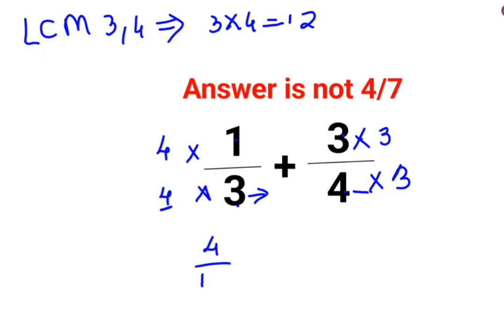Now since the denominators are the same, this can be written as 4 plus 9 directly over 12. This comes out to be 13/12.